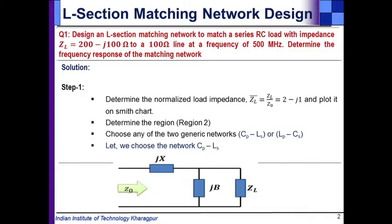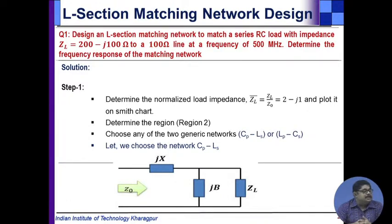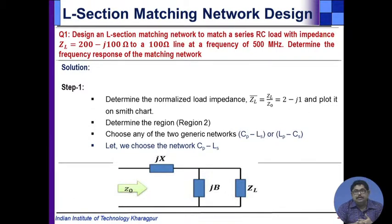The first problem is to design an L-section matching network to match a series RC load with impedance Z_L equal to 200 minus j100 ohm to a 100 ohm line at a frequency of 500 megahertz. Also determine the frequency response of the matching network. We will do a lumped element L-section matching.